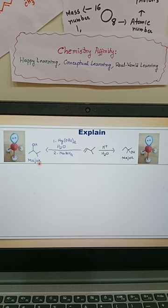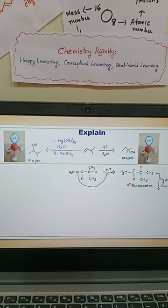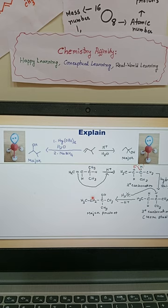This can be explained by the mechanism. For acid-catalyzed hydration, first we get 2-degree carbocation, then after hydride shift we get 3-degree carbocation, and we get the alcohol as a major product. But for mercuration-demercuration